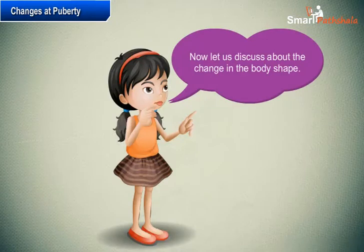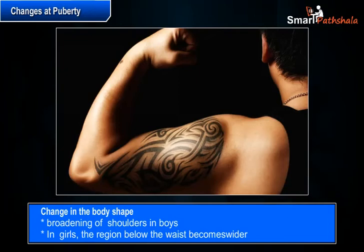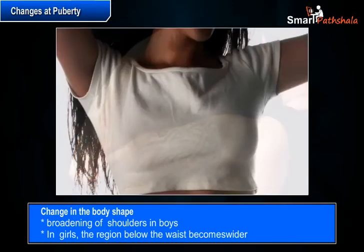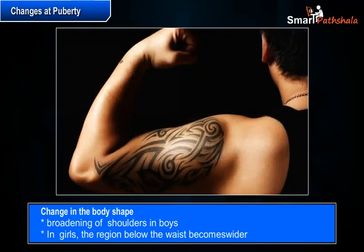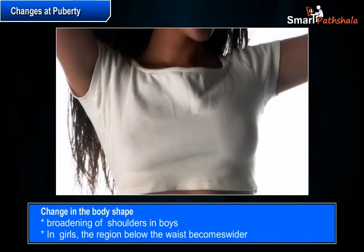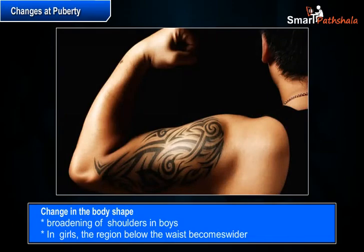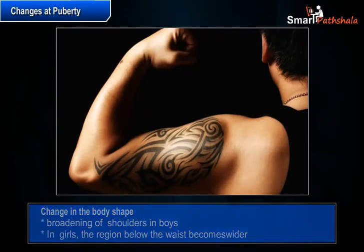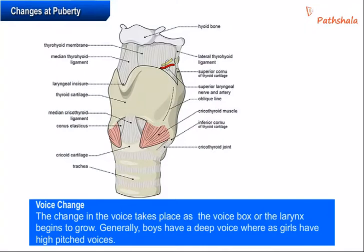At the age of puberty, changes occur in the shape of the body, and the changes that occur in adolescent boys and girls are different. Generally we observe the broadening of shoulders in boys as a result of growth, and in girls the region below the waist becomes wider. In boys the muscles of the body grow more prominently than in girls.